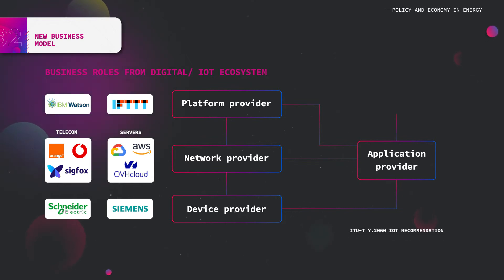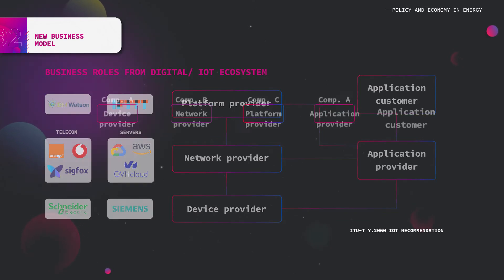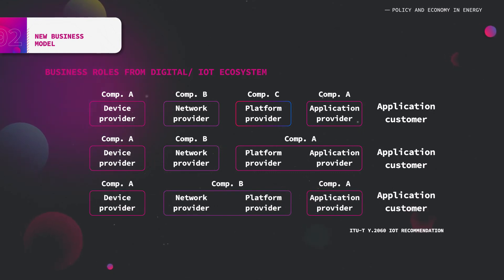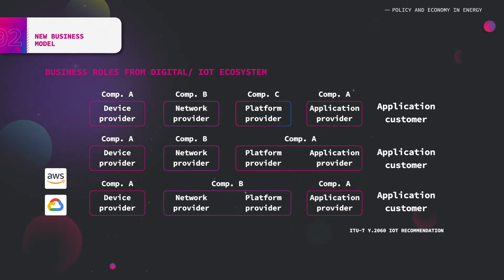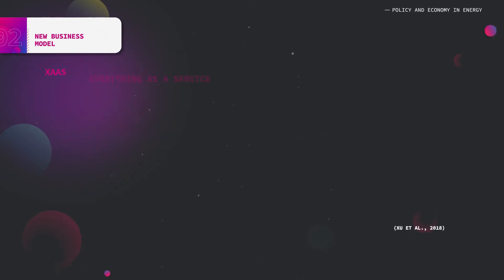Application providers are companies that conceive applications to support their activities or provide services to clients. They utilize the capabilities of platform, network, and device providers in order to provide an application for end customers. Examples can be found in all web applications or mobile apps provided by energy retailers. A company can endorse one or several roles, leading to a specific business model — notably the case of AWS and Google Cloud Platform, which not only sell infrastructure but also a platform to ease infrastructure management and data processing.